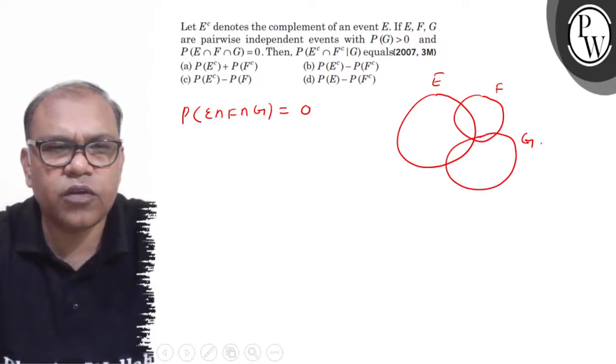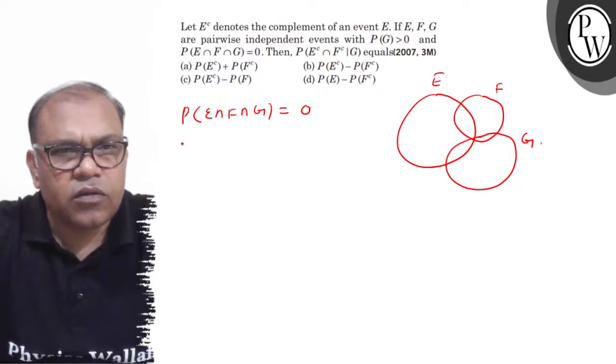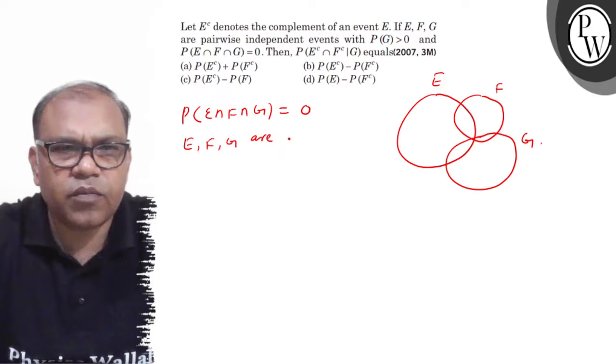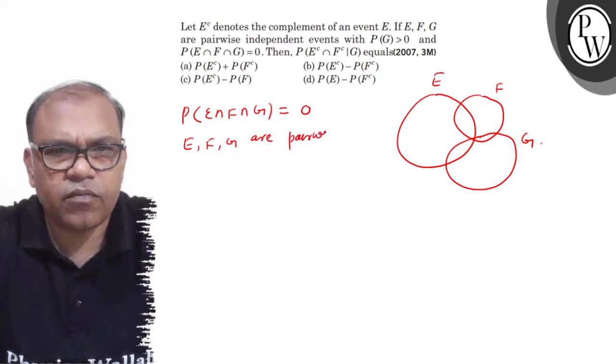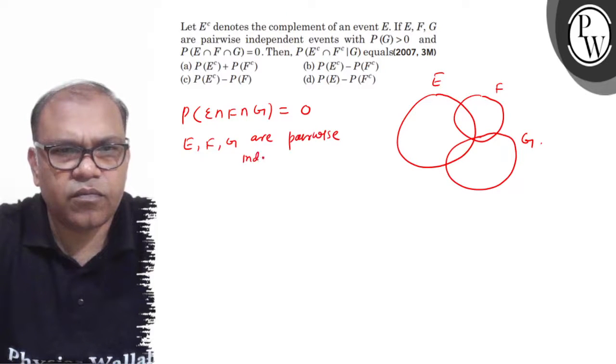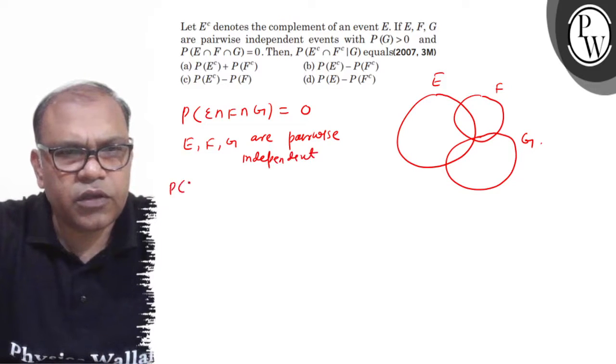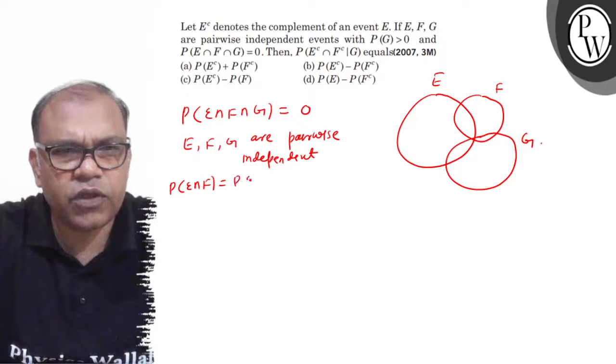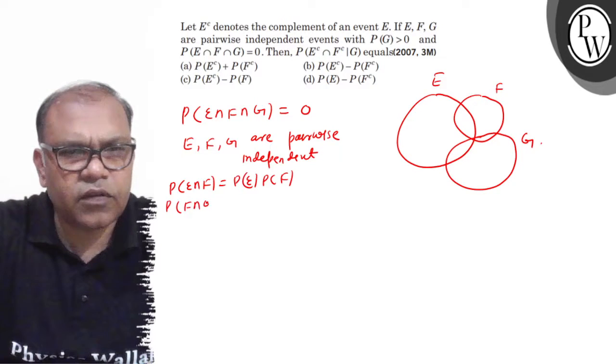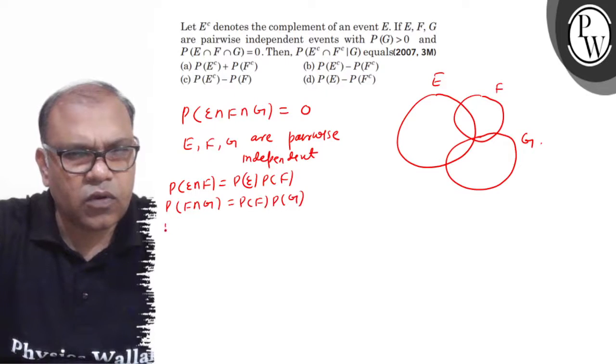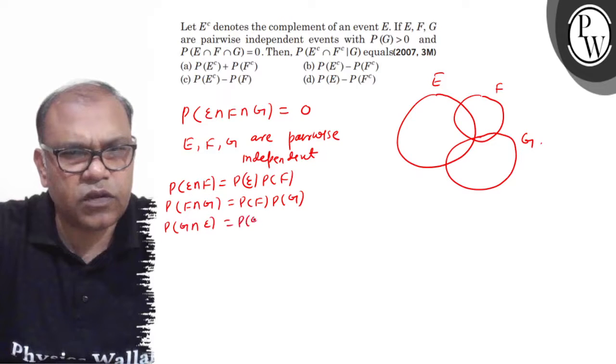Now, E, F, and G are pairwise independent. This means that P(E ∩ F) equals P(E) into P(F), P(F ∩ G) equals P(F) into P(G), or P(G ∩ E) equals P(G) into P(E).